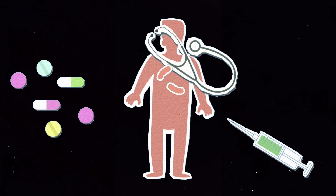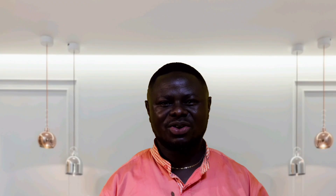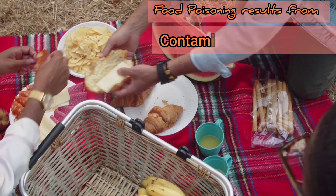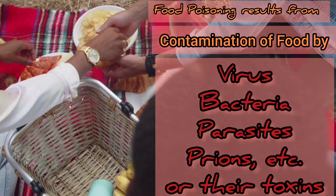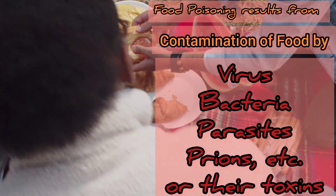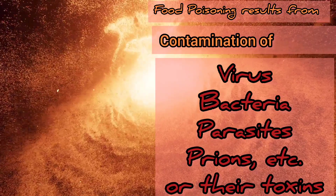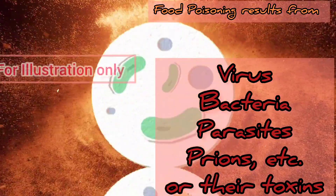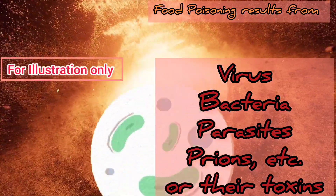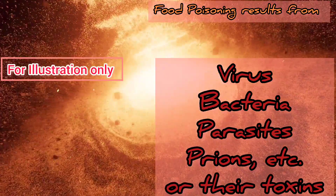Food poisoning is any illness resulting from contamination of food by pathogenic germs such as bacteria, viruses, parasites, as well as plants or their toxins.